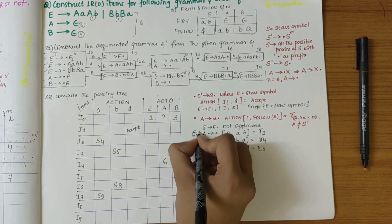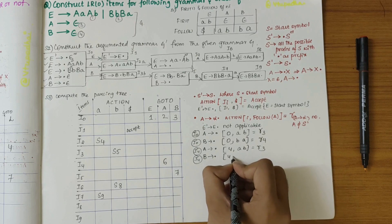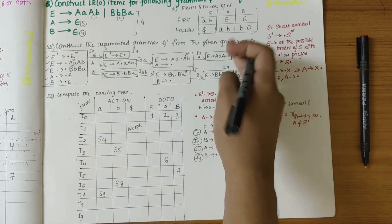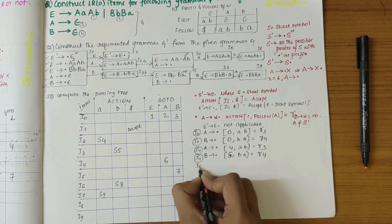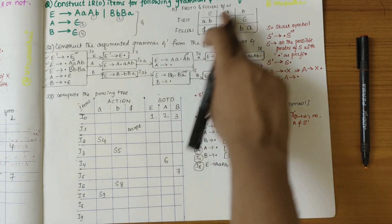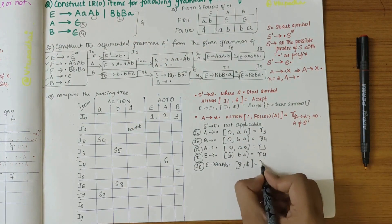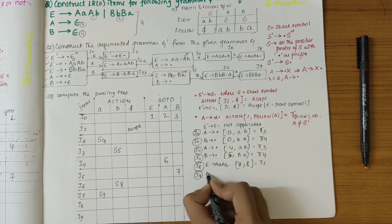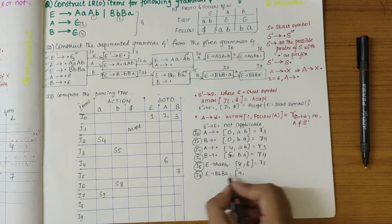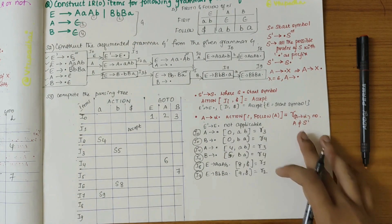In I8 we have E → AaAb•, so action[8, follow(E)] = action[8, $] = r1 (production 1). In I9 we have E → BbBa•, so action[9, follow(E)] = action[9, $] = r2 (production 2). All reduce entries are now computed.